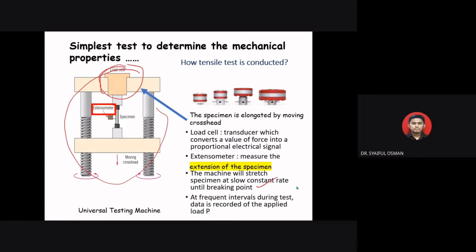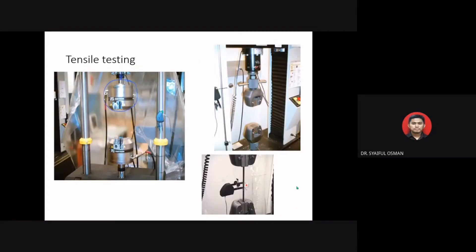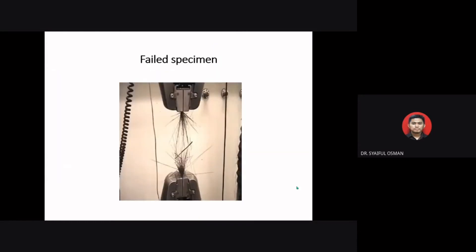The machine is connected to a computer and the data will be analyzed by software. There are different types of holders for different types of specimens in tensile testing. Here we also have a failed specimen of CFRP — carbon fiber reinforced polymer — showing the specimen failing under tension.